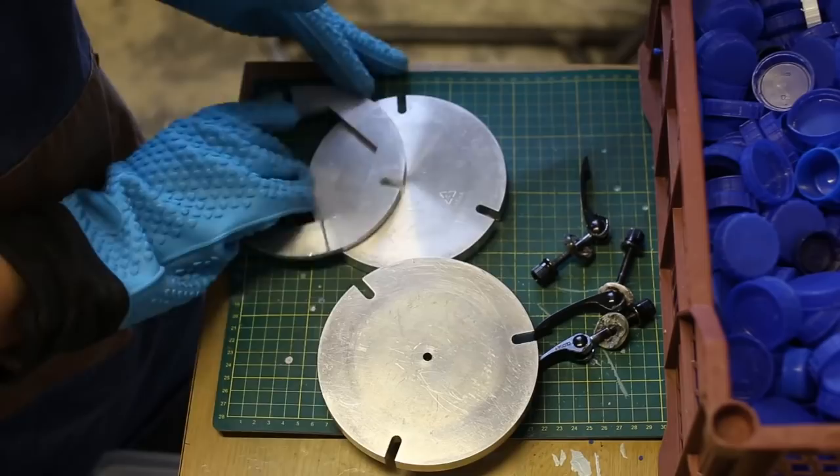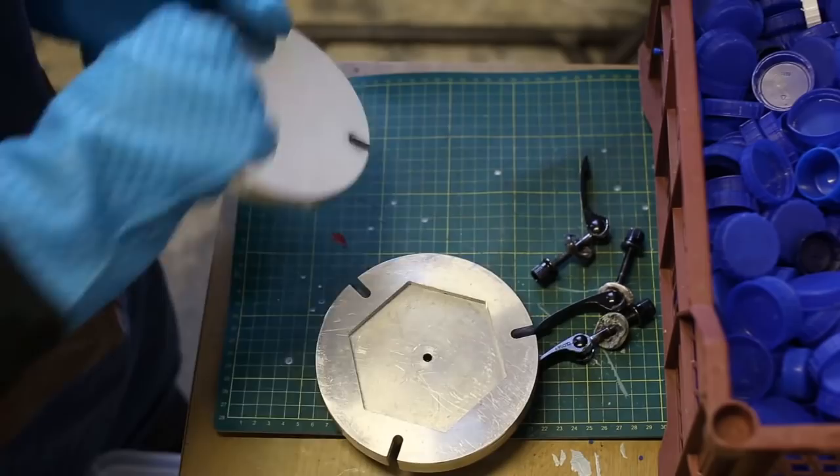While plastic is slowly melting, I put the mold together using bicycle quick-release skewers. I align the parts and then close it up tightly.